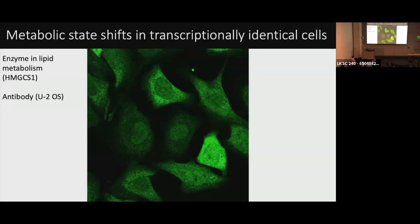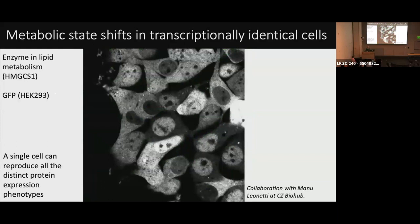We were concerned about antibody cross-reactivity — antibodies often stick to the nucleus because it's charged. So we teamed up with Manuel Leonetti at the Chan Zuckerberg Biohub in San Francisco and performed biallelic GFP tagging of this enzyme and 80 other enzymes in HeLa cells. We took a single cell, let it divide into a clonal expansion, and asked whether we still see the same variability. The results proved that a single cell has the capacity to reproduce all these different functional phenotypes — that was the case for most enzymes tested.